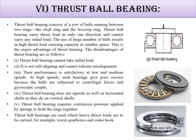Thrust ball bearings do not operate as well on horizontal shafts as on vertical shafts. They require continuous spring pressure to hold the rings together. Thrust ball bearings are used where heavy thrust loads are present — for example, in worm gearboxes and crane hooks. This concludes the types of rolling contact bearings; we'll continue with the next lecture.